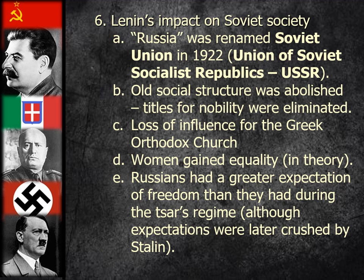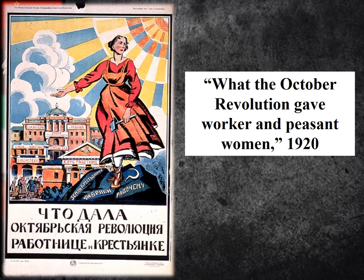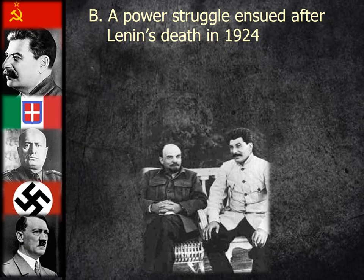Russians had greater expectations of freedom than under the Tsar's regime, although those expectations were later crushed when Stalin came to power. Lenin dies in 1924 and a power struggle ensues. Lenin had been the subject of assassination attempts during the Russian Civil War — a bullet was actually lodged in his brain after one of those attempts. It did not kill him immediately, but eventually caused strokes, one of which ended his life in 1924. Lenin left no successor because totalitarian regimes are based on the cult of personality — the will of the dictator.